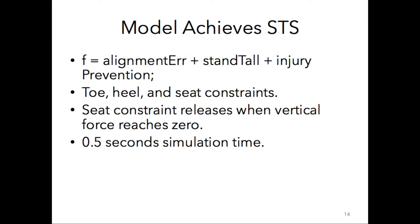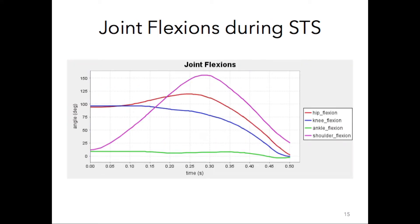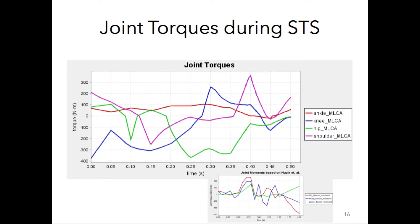Using the following objective function parameters, model, and simulation constraints, the optimizer was able to perform a semblance of sit-to-stand. From the kinematics of the optimized motion, I was able to extract the joint flexions as well as the joint torques. This is a good start for informing the design of a wearable exosuit.